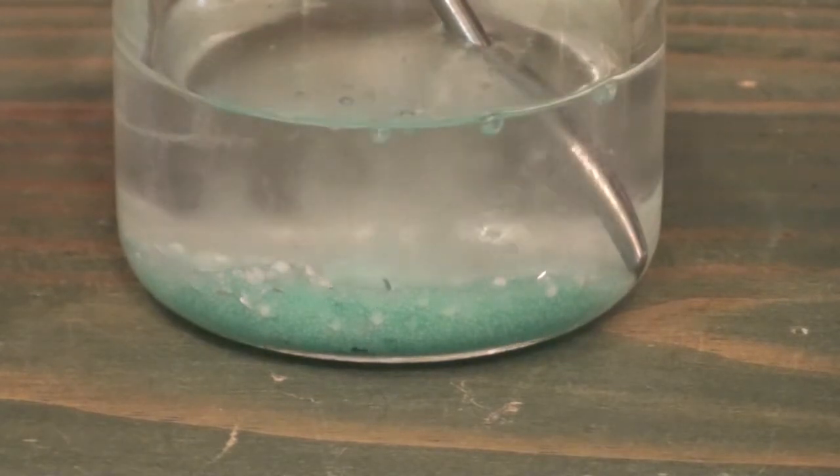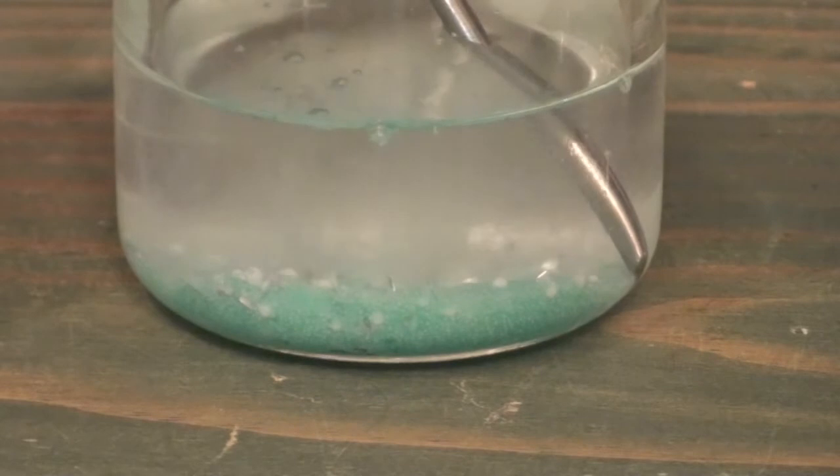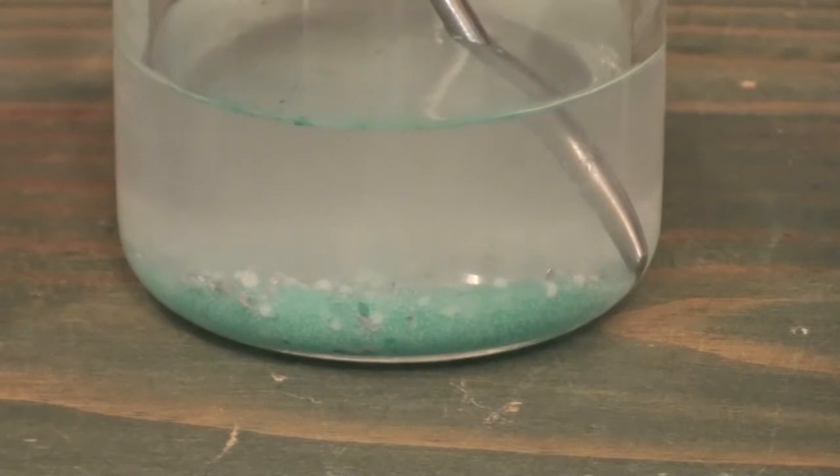And one of the things you'll notice is that a lot of bubbles are being given off. There's something interesting that happens when you add Drano to water. What you get is the formation of sodium hydroxide, and with the Drano crystals are also little pieces of aluminum. You might see them floating around.